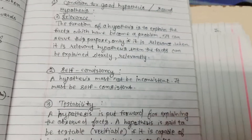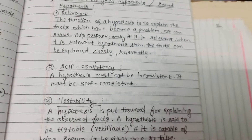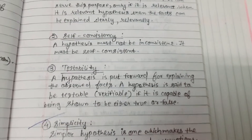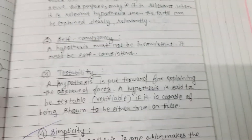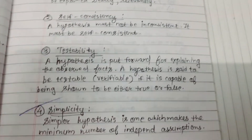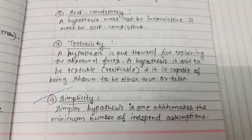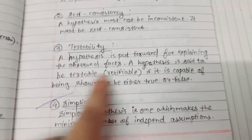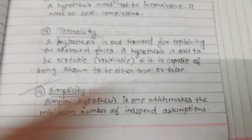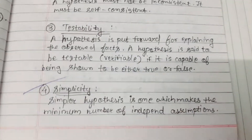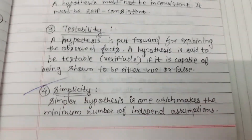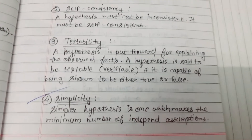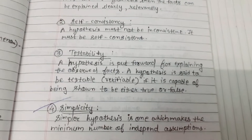Condition 2: Self-consistency. A hypothesis must not be inconsistent — it must be self-consistent. Condition 3: Testability. A hypothesis is put forward for explaining the observed facts. A hypothesis is said to be testable if it is capable of being shown to be either true or false.